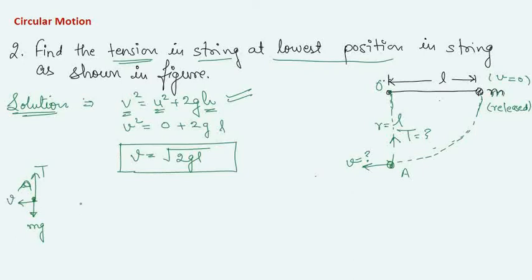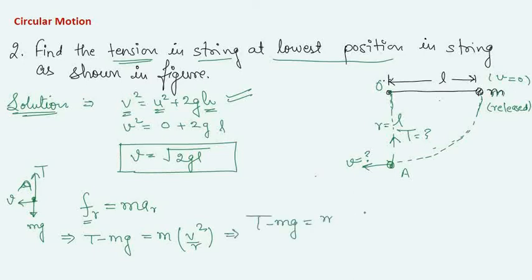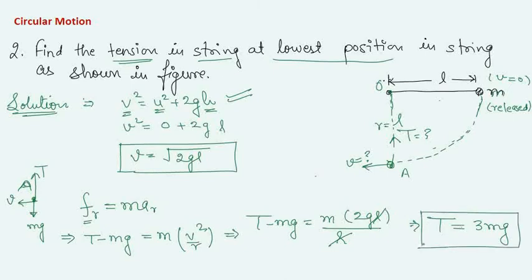Writing the radial equation of motion at point A: T minus mg equals m·v²/r. Substituting v² = 2gl and r = l: T minus mg = m·(2gl)/l = 2mg. Therefore T equals 3mg. At the lowest position in this circular path, the tension in the string is 3mg.